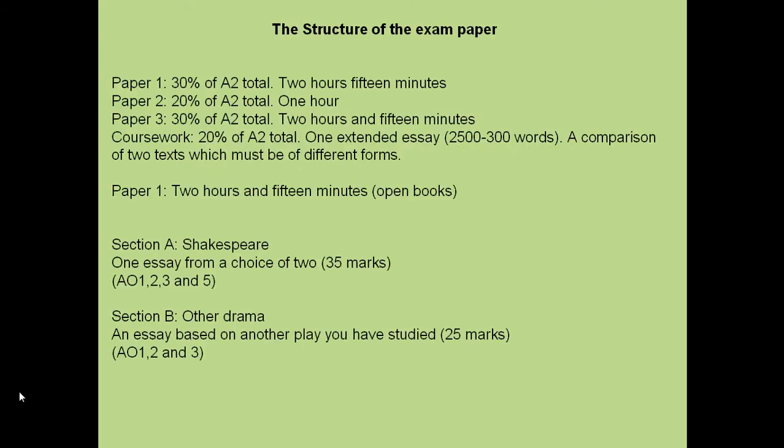Let's have a brief overview of the structure of the qualification itself. There are three exam papers and one piece of coursework. Paper 1 and Paper 3 are 30% each, both two hours and fifteen minutes in total. Paper 2 and your coursework make up 20% each. One is a one-hour examination and one is a comparison essay based across two different forms. Paper 1 then: Section A focuses on Shakespeare and you have a choice of a couple of questions.